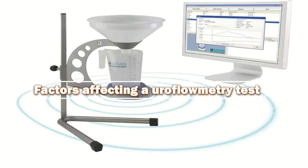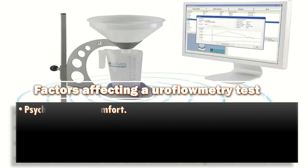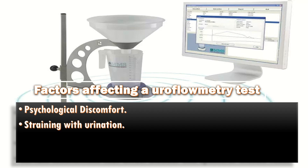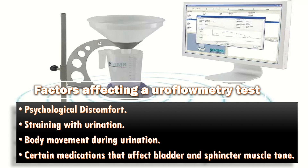What factors affect uroflowmetry testing? Psychological discomfort has to be minimized in order to obtain a proper voiding representation during flow measurement, and the patient's cooperation is essential. Other factors which influence accuracy include straining with urination, body movements during urination, and certain medications that affect bladder and sphincter muscle tone.